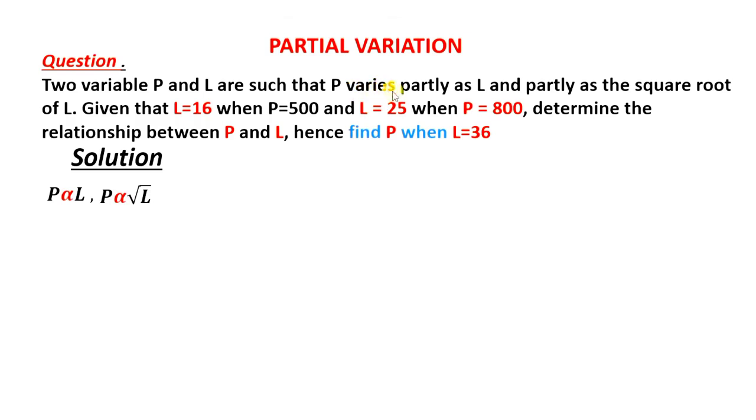We are going to write a single equation with all of this information. Remember, we are going to consider this information here. We are told that P varies partly as L and partly as the square root of L. Because of the word partly, we are able to tell this is partial variation and for that reason we are going to add.